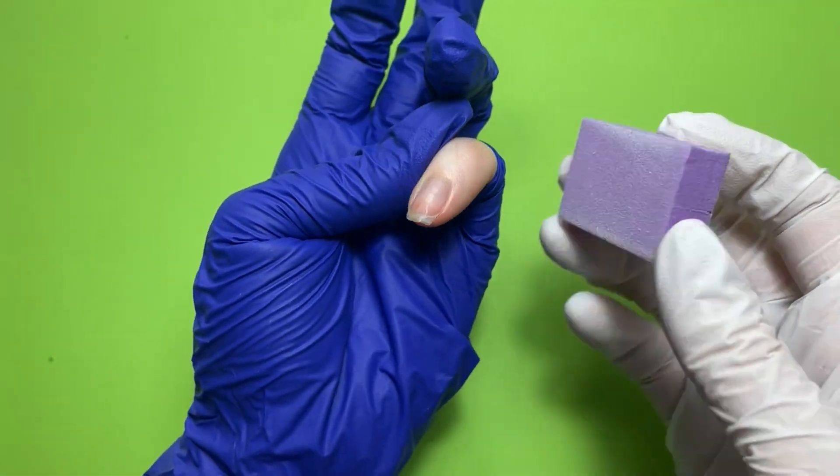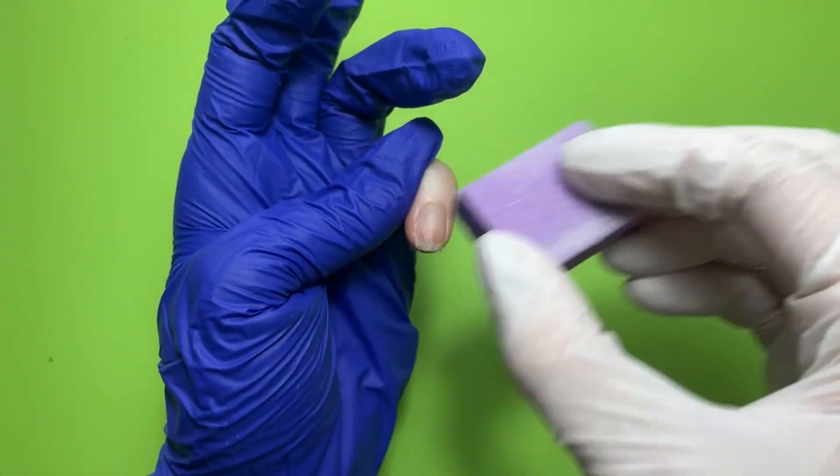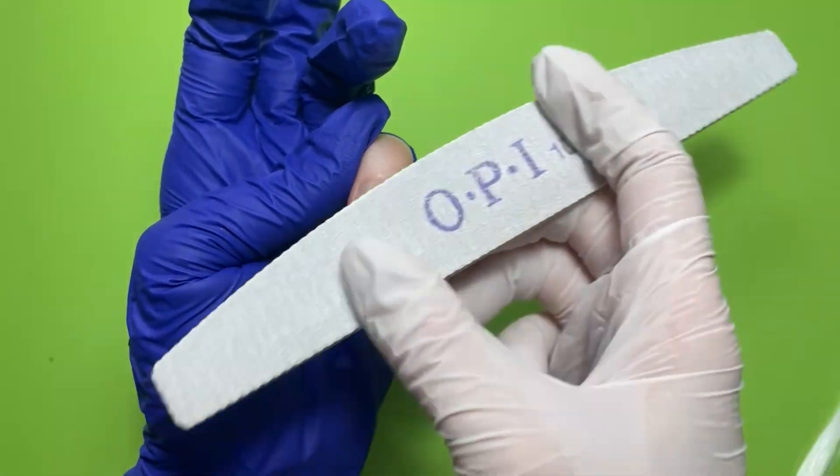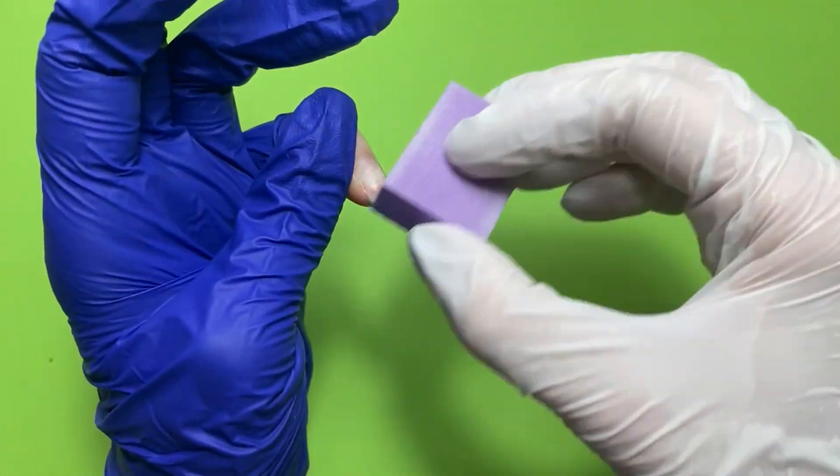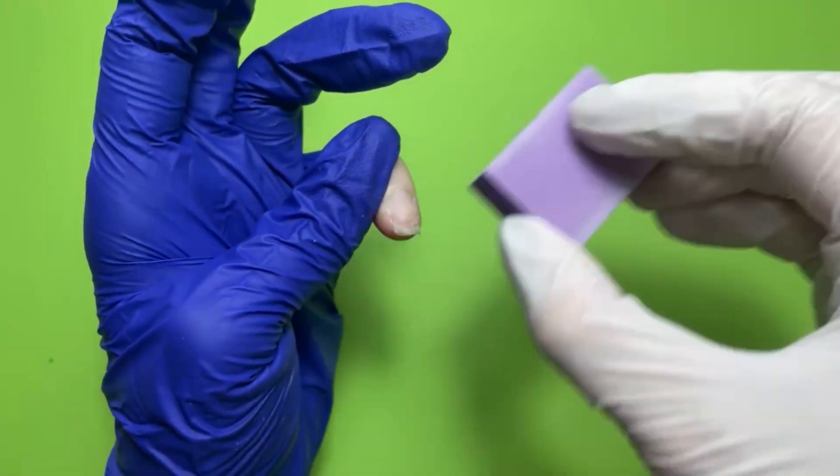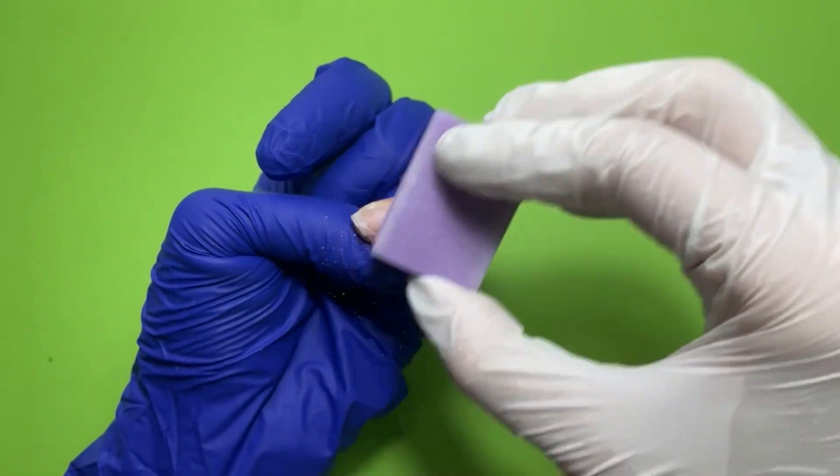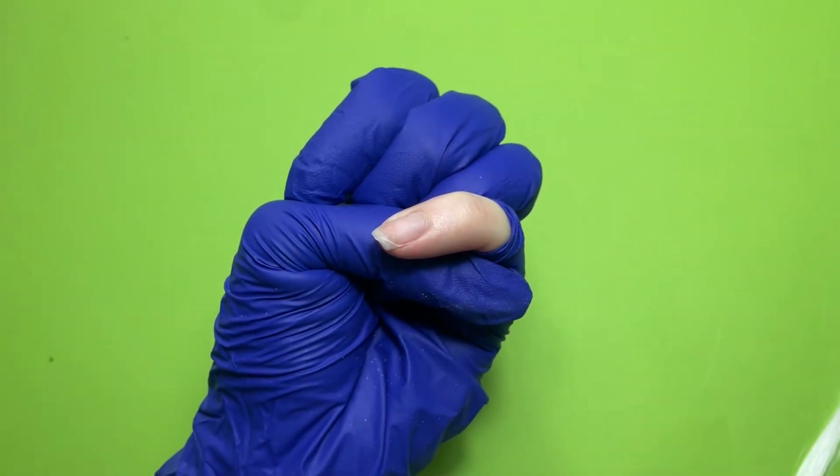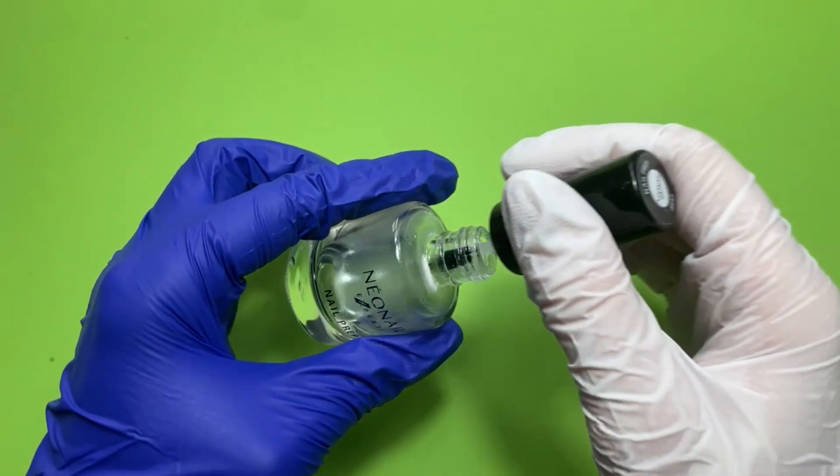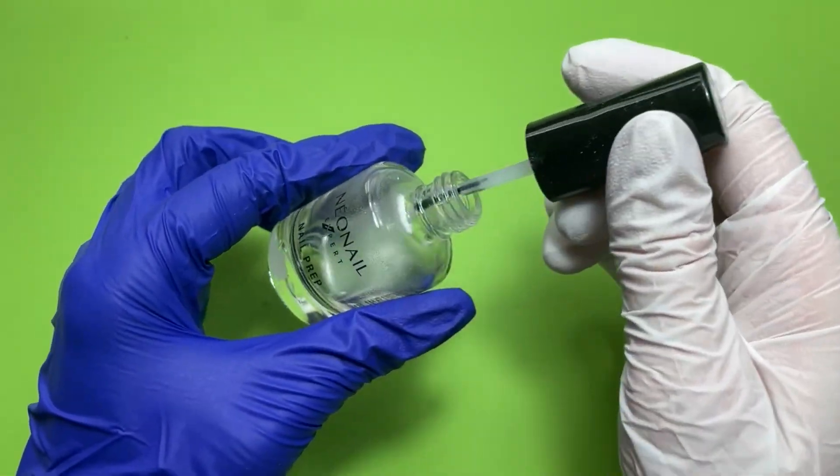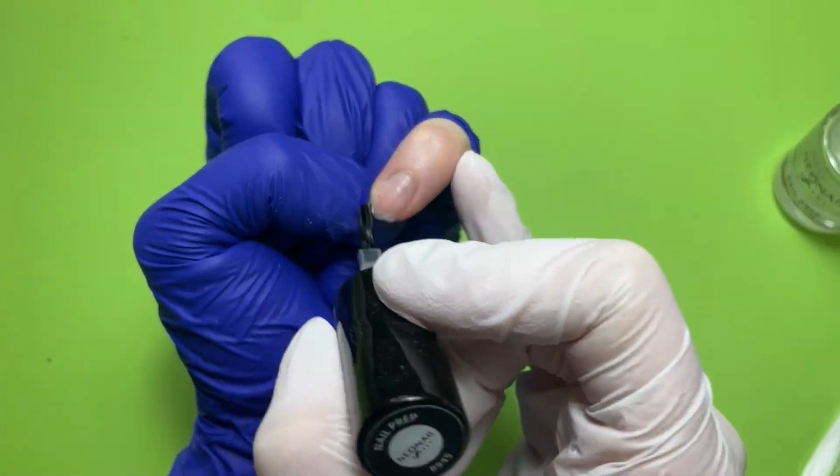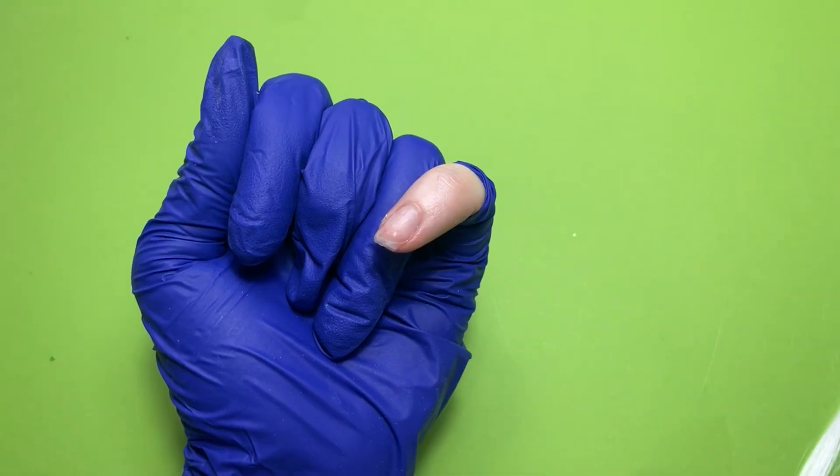We'll start by buffing our nail. You can take a little buff or a nail file, whatever you want. Let's remove the dust. Now we need to use dehydrator—if I don't have dehydrator, I use 96% alcohol, which works really good for me. It's cheap and you can buy it in any pharmacy. Let's work until our nail gets dry.